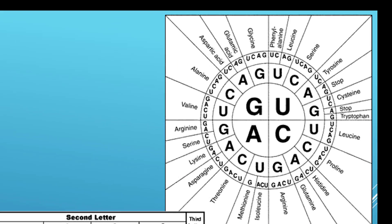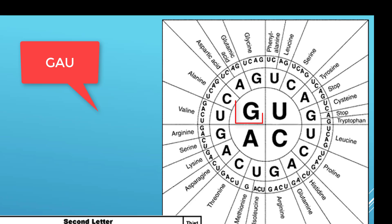If you do that on the circle one, start in the center and work outward. Your first letter is G, so you find the big G, line that up with the A, and then line that A up with the U, and you get aspartic acid. Aspartic acid and aspartate are really the same thing, so you might get a slightly different name, but they're pretty similar.